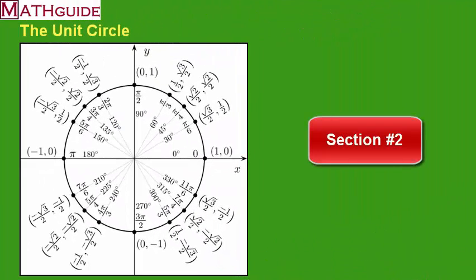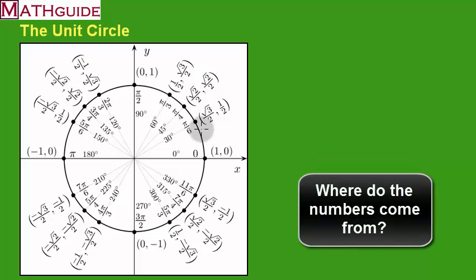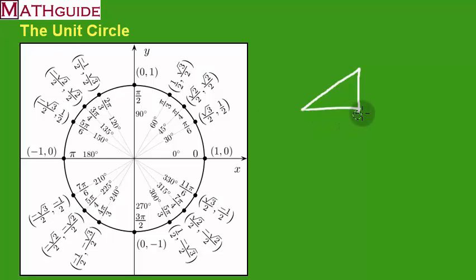This is section two: Where do the numbers come from? These numbers on the unit circle need to be explained. Let's go back to special triangles — let's start with a 30-60-90 triangle. Let's say we start with a triangle that's got a 30 degree angle. We know opposite 30 is 1. This is our 90 degree angle, which has to be opposite — that is 2.